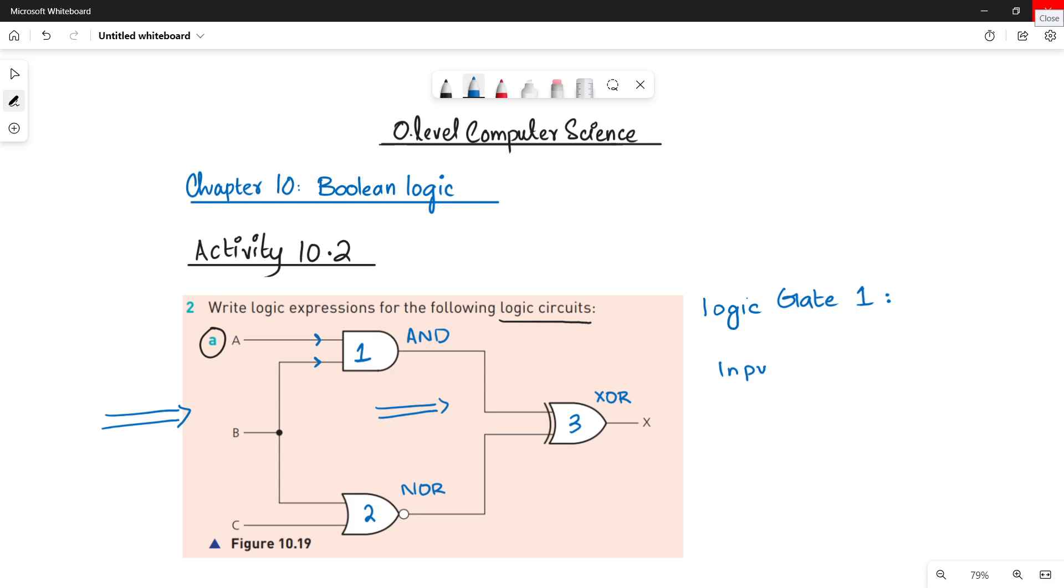Your input 1 will be written first, then in the middle you will write the name of your gate, and then here input 2. So the gate that is being used is your AND gate for logic gate 1. It is an AND gate, and if you see the inputs, first input is A and the second input coming into this gate is B.